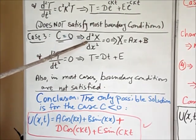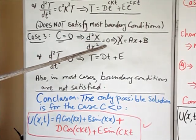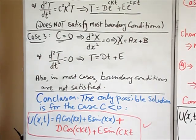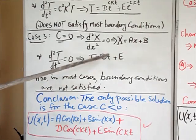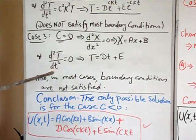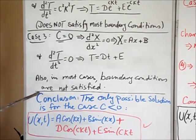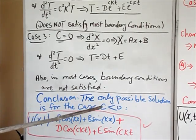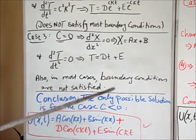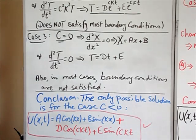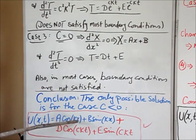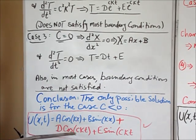For case three, C equals zero. Substituting into equation 3 gives d²X/dx² = 0, so X = ax + b, a linear function. Similarly, d²T/dt² = 0 gives T = dt + e. As with the positive case, these solutions do not satisfy the boundary conditions in most problems. Therefore the only useful solution is for C less than zero, and the general solution is: u(x,t) = [A cos(kx) + B sin(kx)] × [D cos(ckt) + E sin(ckt)]. Thank you for watching, and please subscribe.